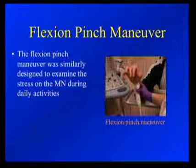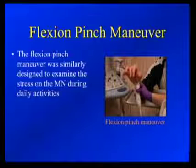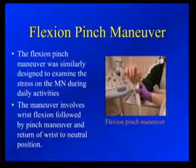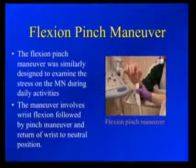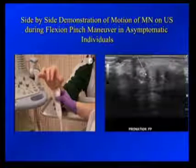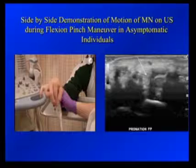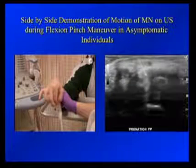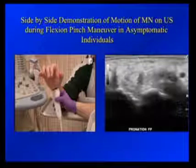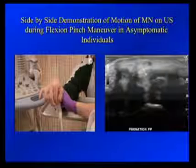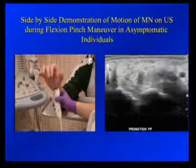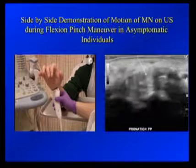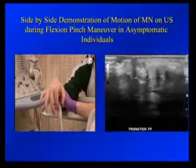The next maneuver we now routinely use is the flexion pinch. That maneuver is done with the hand in pronation, holding for about two to three seconds, then releasing and returning the wrist to neutral position. When an individual does this, most of the time there is indeed some sagittal movement of the median nerve relative to the carpal tunnel, even in asymptomatic individuals. You can see the movement of the median nerve into the carpal tunnel with the flexion pinch — the nerve moves sagittally in the carpal tunnel and then moves back out. Sagittal movement of the nerve is quite common in flexion pinching.